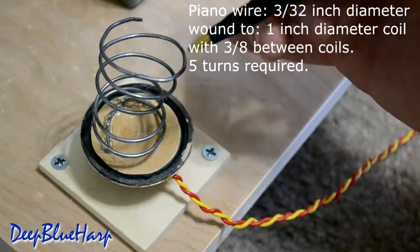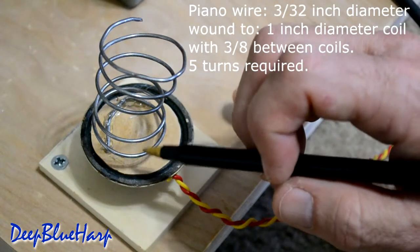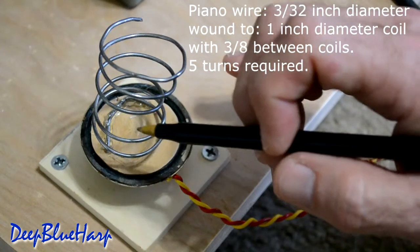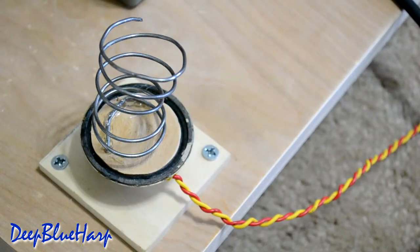There are 5 turns of piano wire and there are approximately 3/8ths of an inch between turns. As you can see, there is a bigger gap here. There are 5 turns of it.